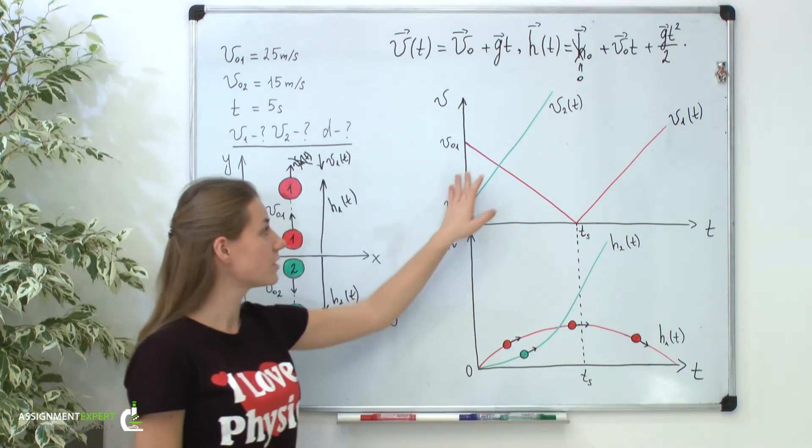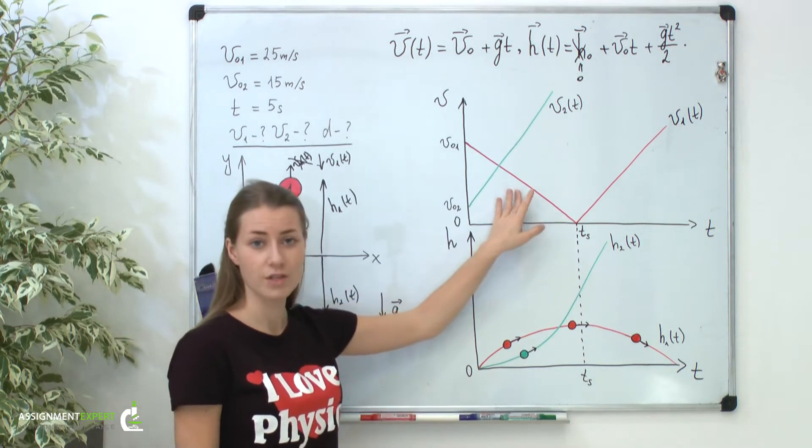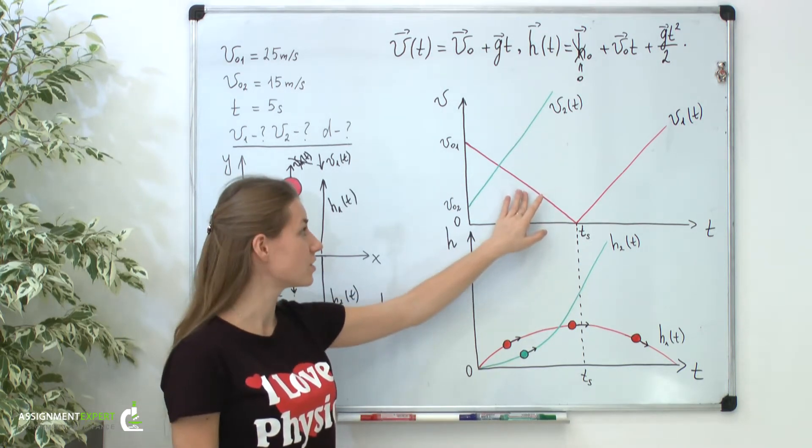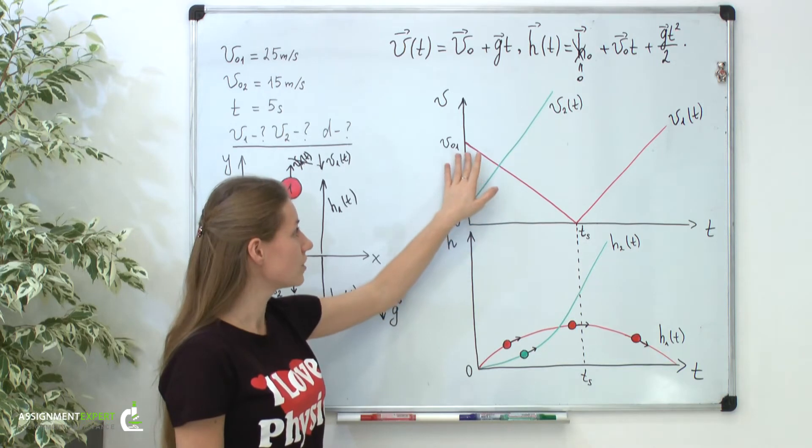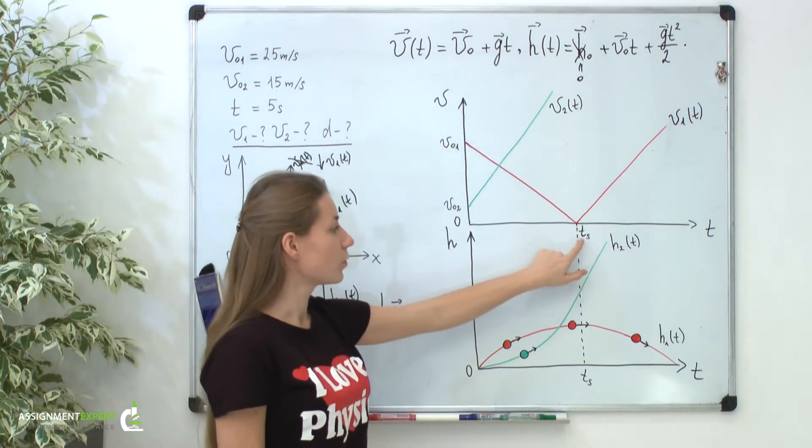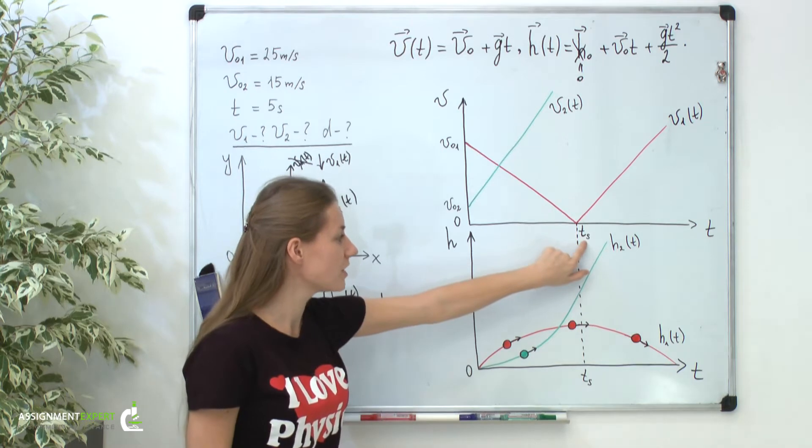But you can see that the behavior of the red ball is a little bit more complicated. We can see that velocity decreases till the time which we have called the time ts.